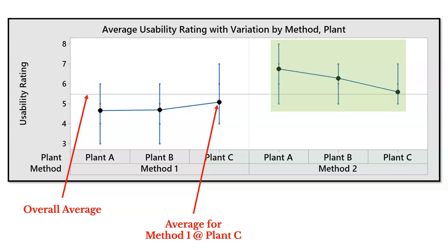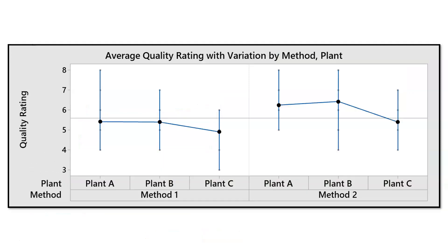Now let's look at quality ratings. Again, we have a panel for method one on the left and method two on the right, with the average at each plant for each method. It looks like method one had lower quality ratings on average than method two. So method two appears to be our best manufacturing method. Plant A performs well in both usability and quality, so we might want to study what plant A is doing well and apply those best practices to plants B and C. We certainly want to stick with method two, as it produces more usable and higher quality locks.